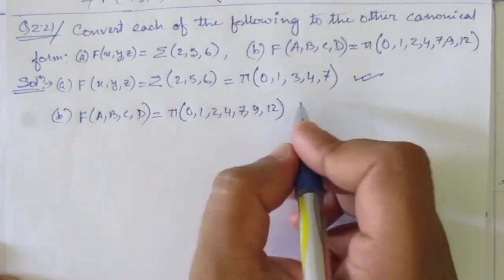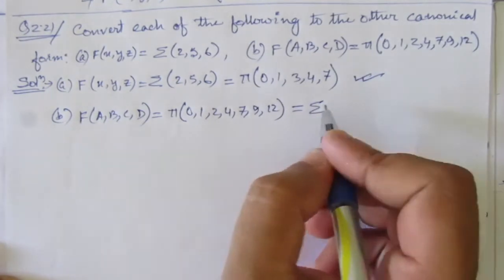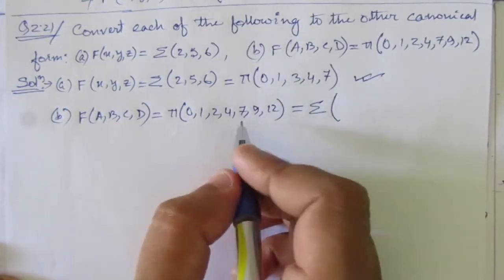So we have to express it in sum of minterm form. In sum of minterm, we will have the terms that are not present here.